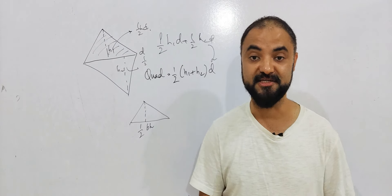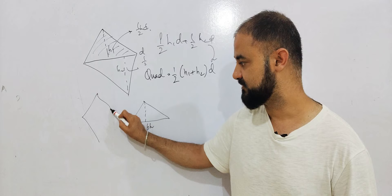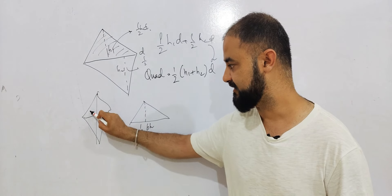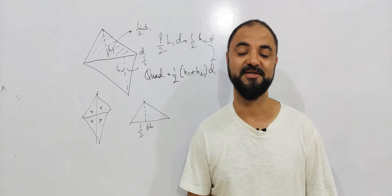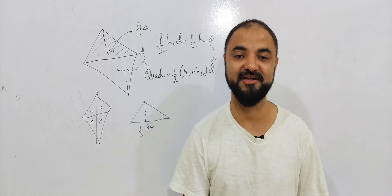Kite, trapezium, rhombus. If I talk about rhombus, it's basically a type of kite. Rhombus is basically four right-angle triangles joined together. So if you remember this area, you can find every other area.